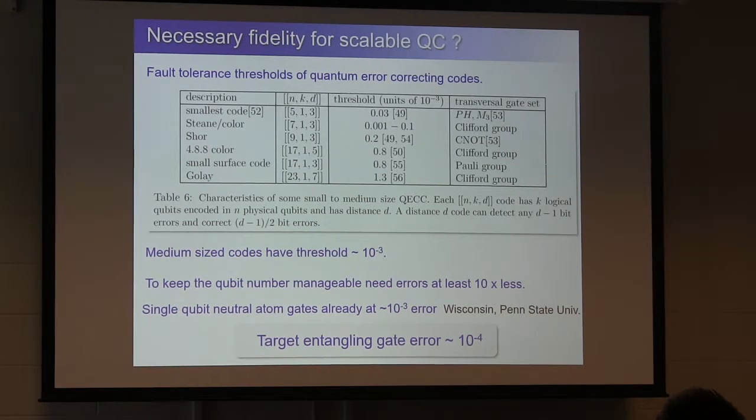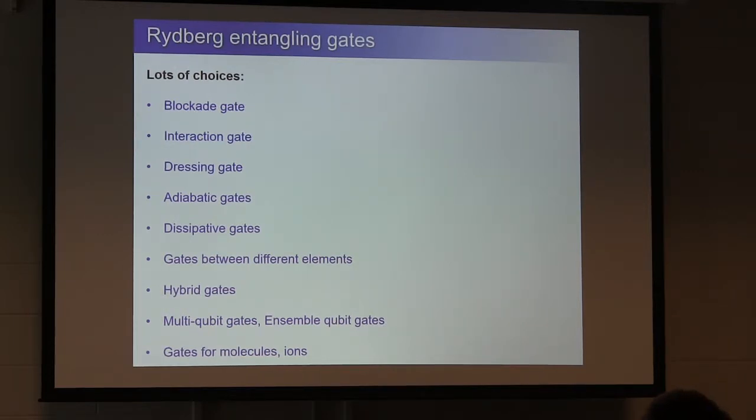And you can see for these sort of 15 or so qubit encodings, the thresholds are around 10 to minus 3. You can't really scale up with a performance at a threshold, because then you would need an infinite number of physical qubits. So probably you need 10 times lower gate errors than the threshold, something like that. Single-qubit neutral-atom gates in arrays are already available at the roughly 10 to minus 3 error in our lab and in the Penn State experiments. So a good target when thinking about Rydberg gates is can you get to 10 to minus 4 error?